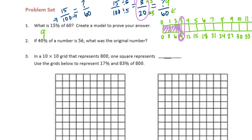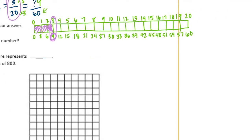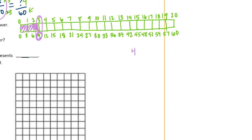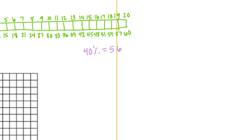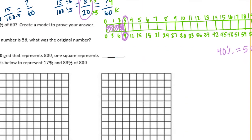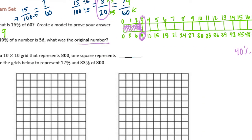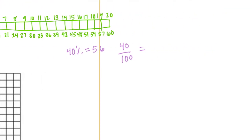If 40% of a number is 56, what was the original number? So 40% of something is 56. I'm going to do this over here. So 40% is equal to 56 of something. We can make this into 40 out of 100 is equal to 56. Now 56 is the part. We don't know the whole number, the original number.